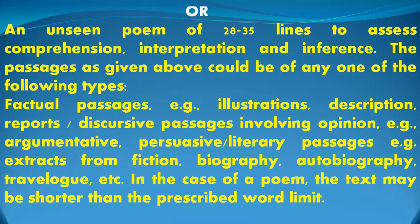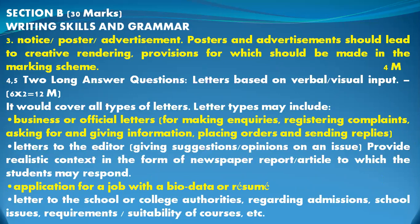Third question — or as an option — there can be an unseen poem of 28 to 35 lines, for which you will have to give answers. Next, your Section B will start. Section A was of 20 marks; now Section B will be of 30 marks. Section B will be of Writing skill and Grammar.